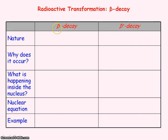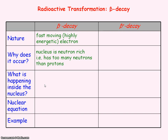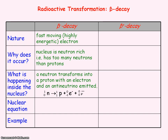There are two types of beta decay: beta minus and beta positive. A beta minus particle is a very fast-moving, highly energetic electron. It occurs because the nucleus is neutron-rich — it has too many neutrons relative to protons to be stable. What happens inside the nucleus is that a neutron changes into a proton, an electron (the beta minus particle), and an anti-neutrino, and the electron and anti-neutrino are emitted out of the nucleus.